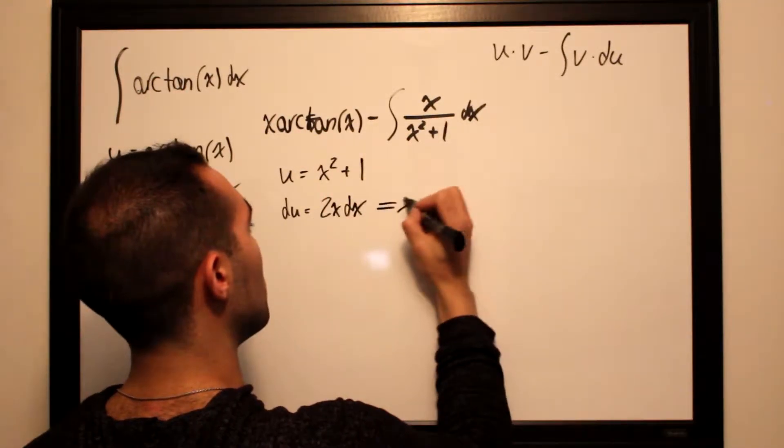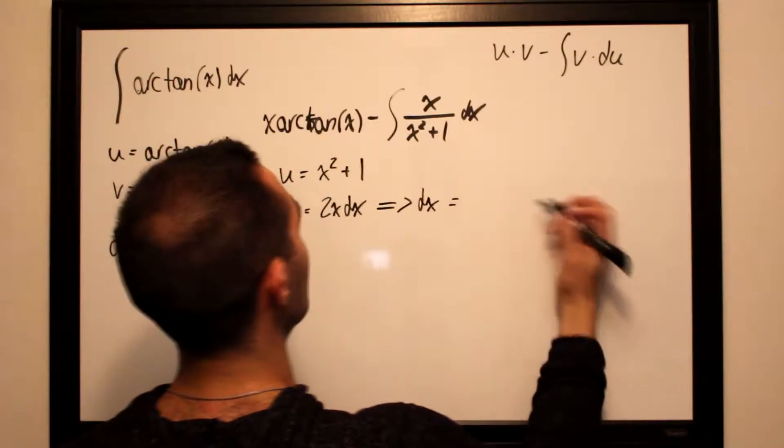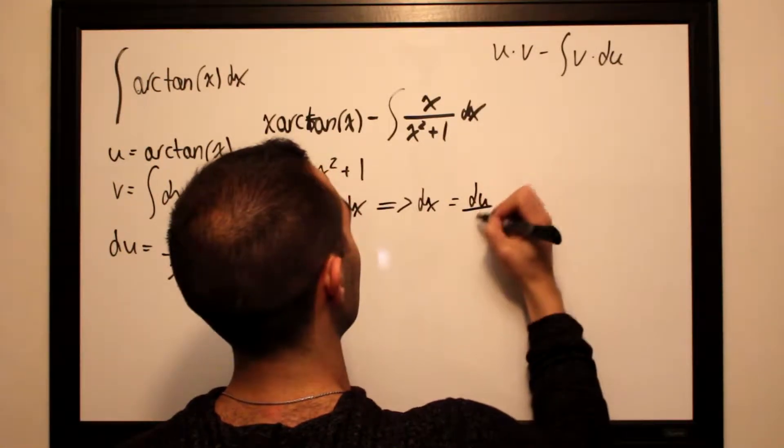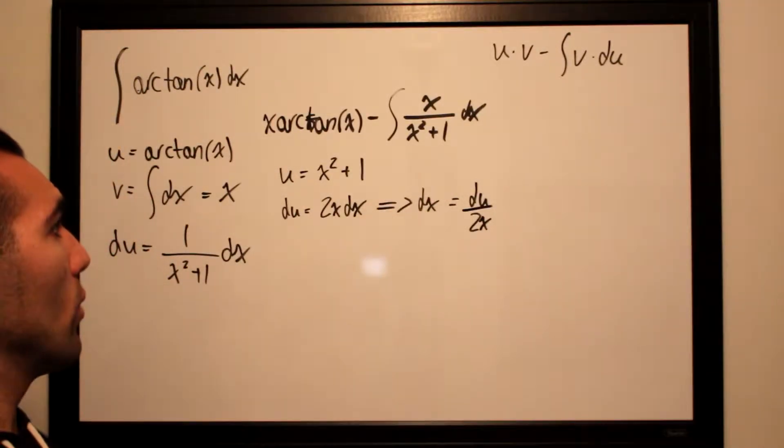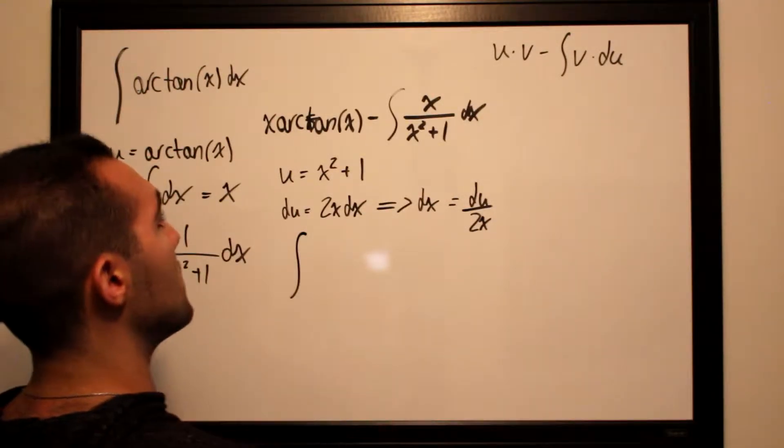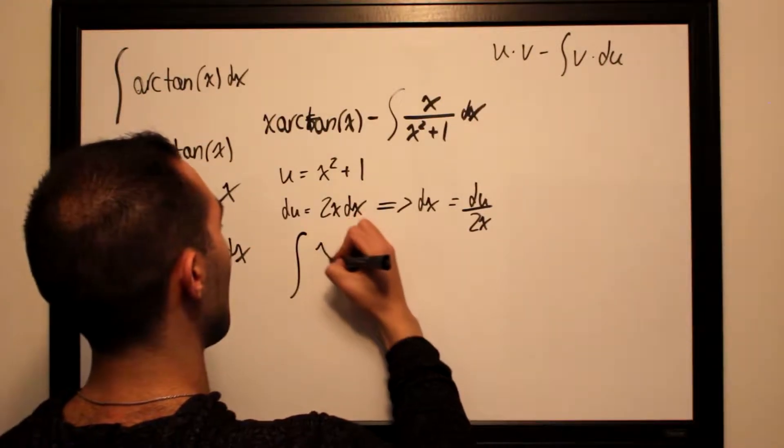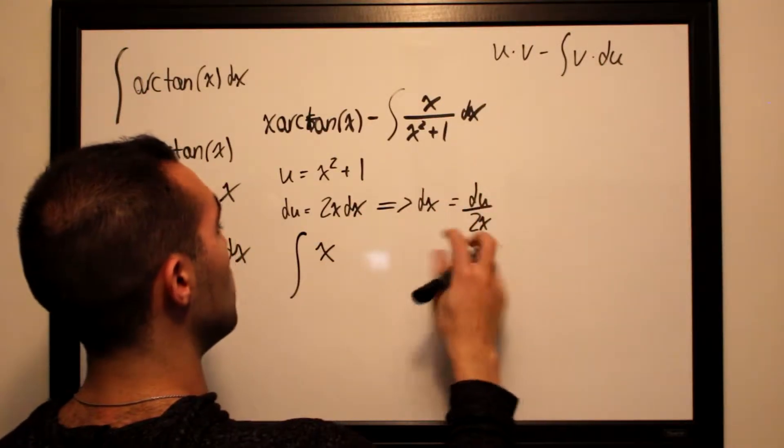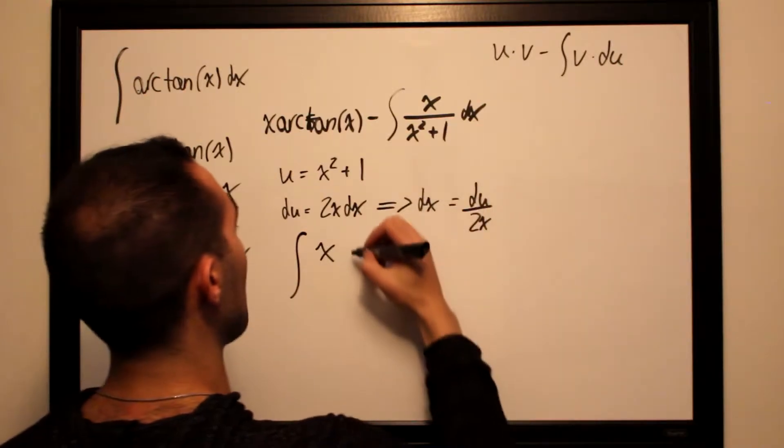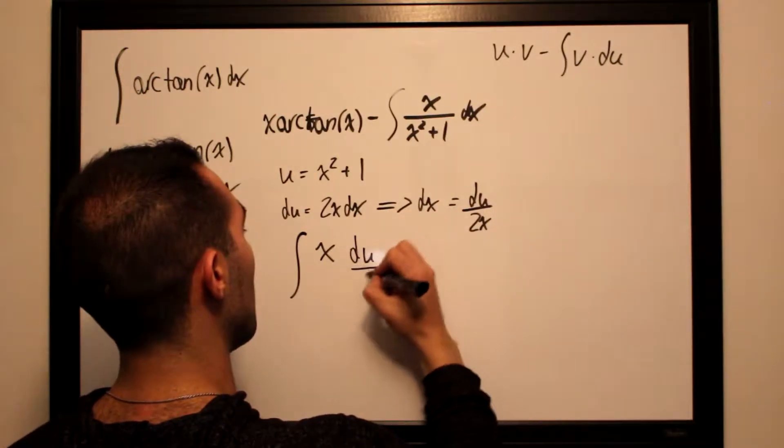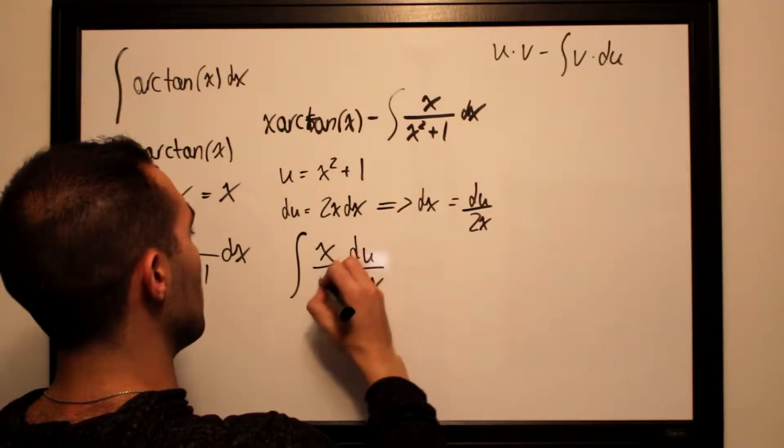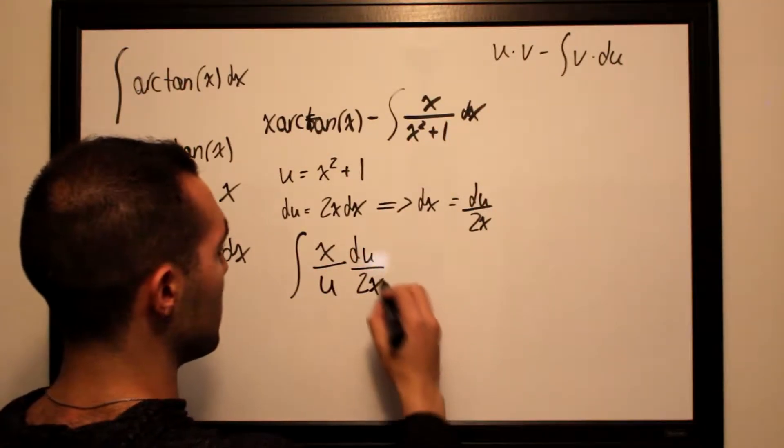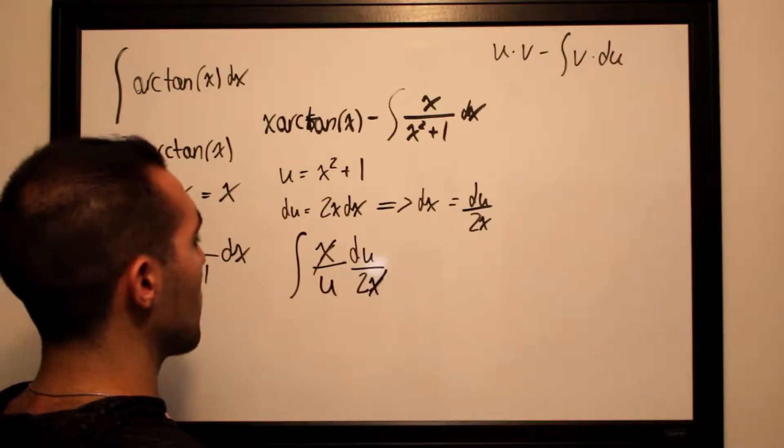Therefore dx equals du divided by 2x. If we rewrite this integral, what we have left is the integral of x times du divided by 2x in the place of dx, du divided by 2x and then divided by our initial u. This will cancel out the x's.